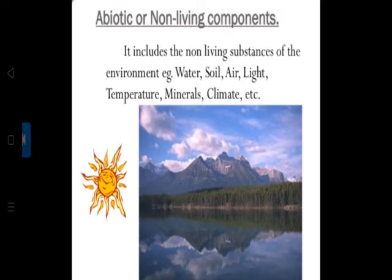When we talk about the abiotic factors, we are talking about climate and habitat. Habitat is the physical environment in which organisms live, including biotic and abiotic components. There are two major habitat types: terrestrial and aquatic. These major habitats are able to support ecosystems because they contain the essential abiotic elements.